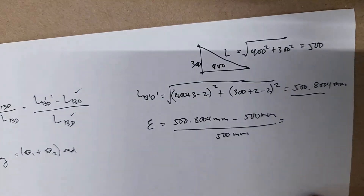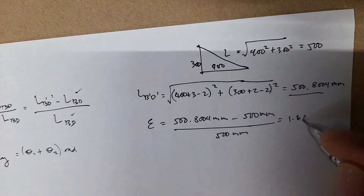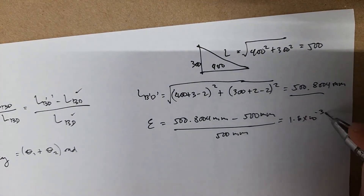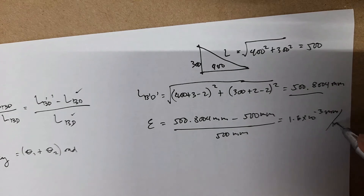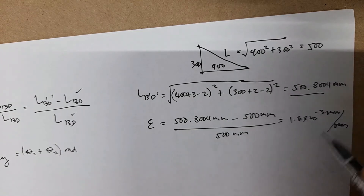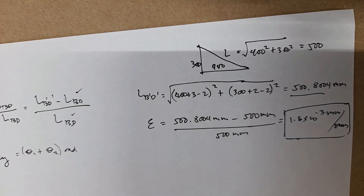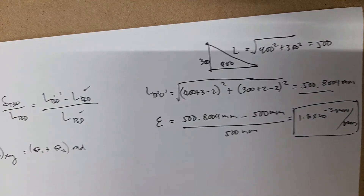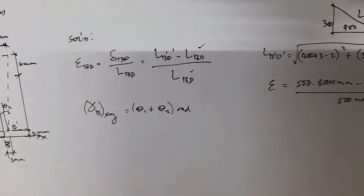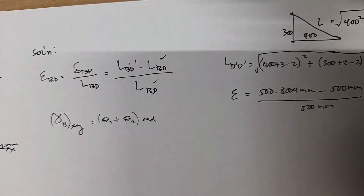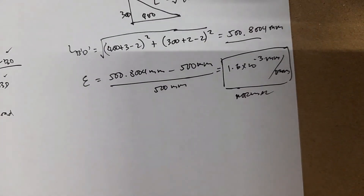The normal strain is 0.804 divided by 500, which equals 1.6 times 10 to the negative 3. That is the value of the normal strain. Now let's proceed with the shear strain.